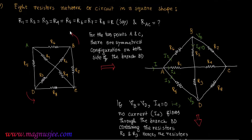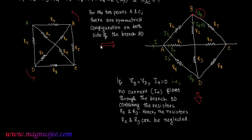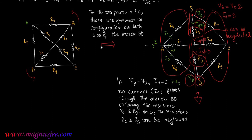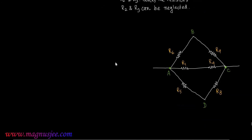We can remove or neglect resistances R2 and R3 because the potentials at points B and D are equal — V_b equals V_d — which means I4 equals zero. Due to the symmetrical configuration on the left and right hand sides of the vertical branch BD, the branch BD containing R2 and R3 can be neglected.